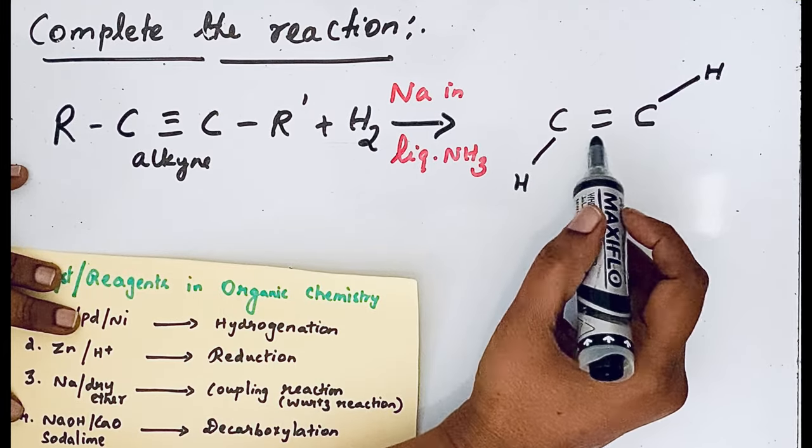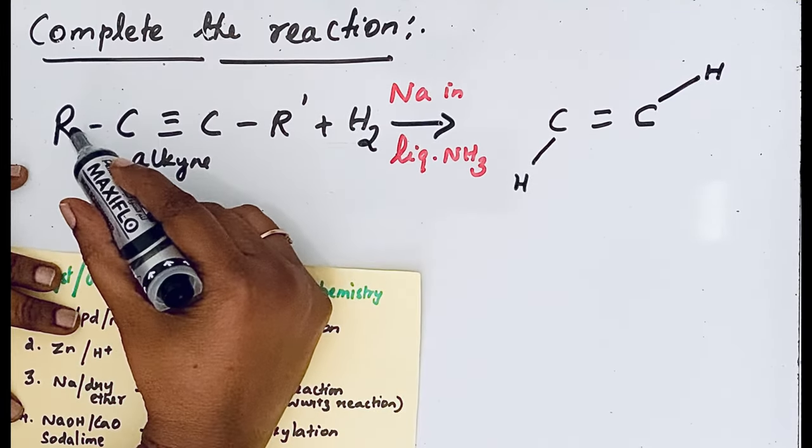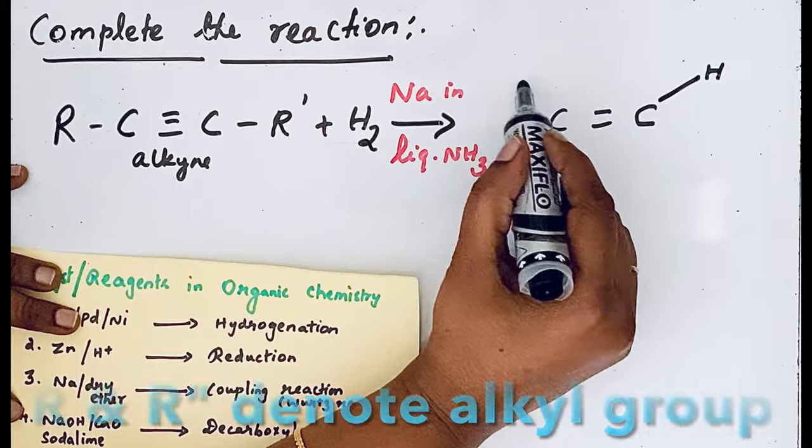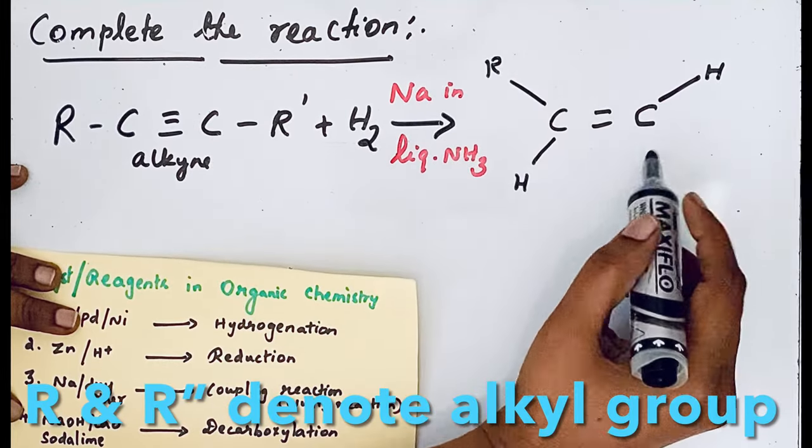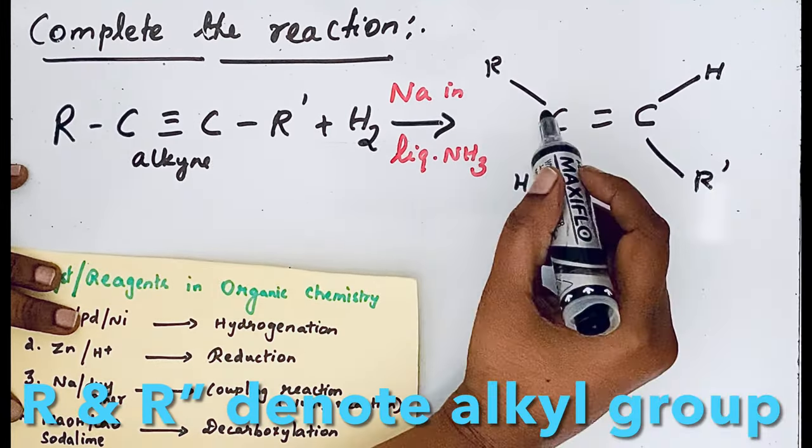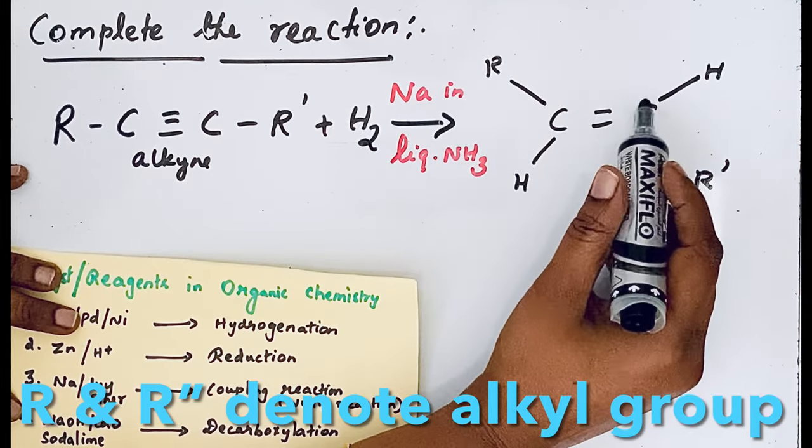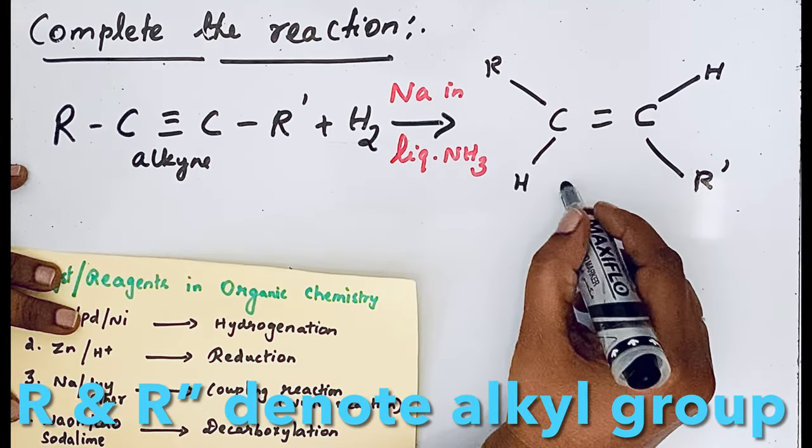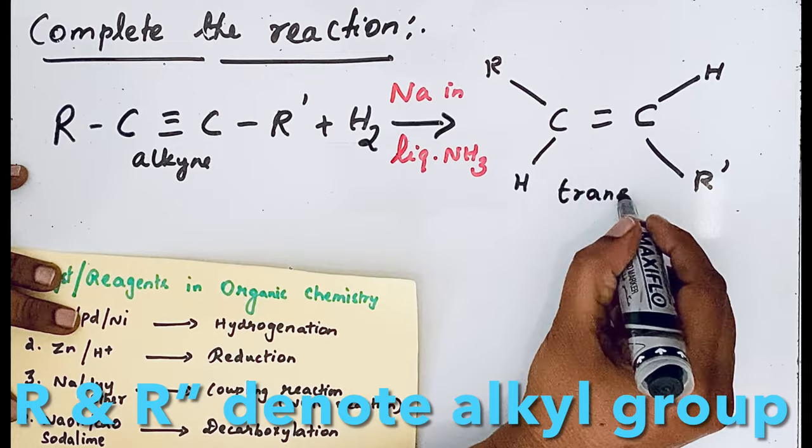The R group is a methyl group, so here R and here R. Since the same groups are on the opposite side, this is trans alkene.